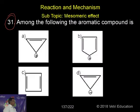With number 31: Among the following, the aromatic compound is A, B, C, and D. What is an aromatic compound?